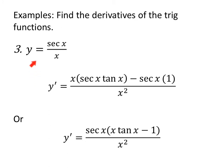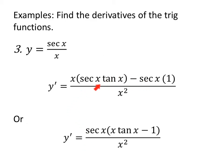The derivative of y equals secant of x over x, using the quotient rule, is x times secant x tangent x — the derivative of secant — minus secant of x, that's high, d low — the derivative of x is 1 — all over low squared. One version is not necessarily better than another, but factoring out secant of x from the two terms in the numerator leaves x tangent x minus 1 in parentheses.